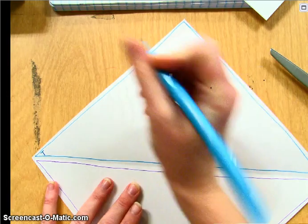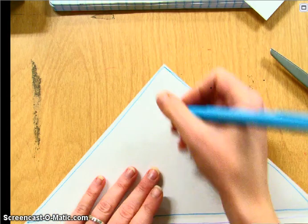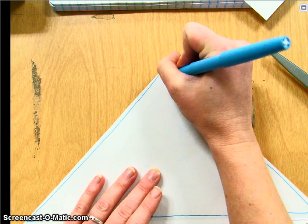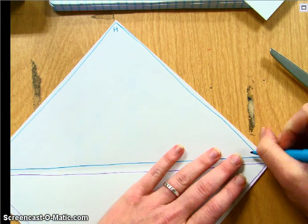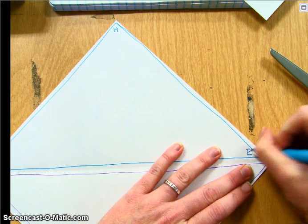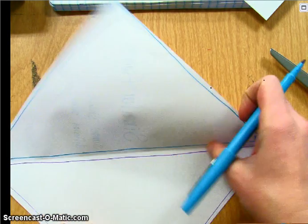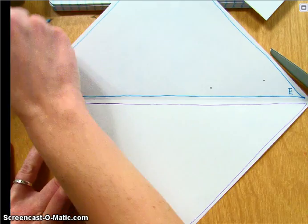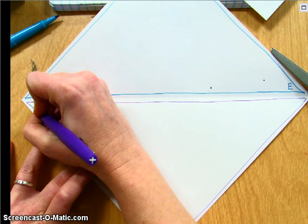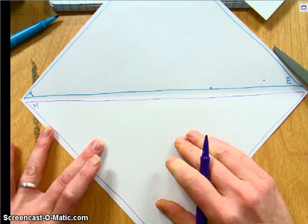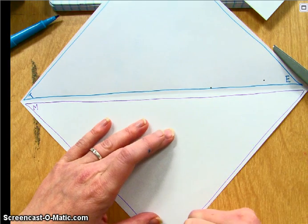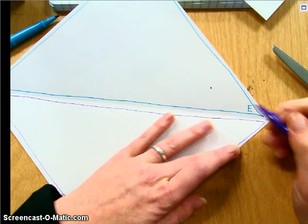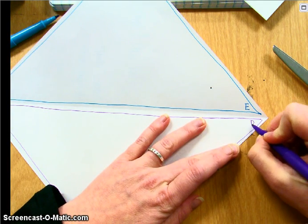I labeled this point T, this one H, this one E, down here. I labeled this one M, U, D.